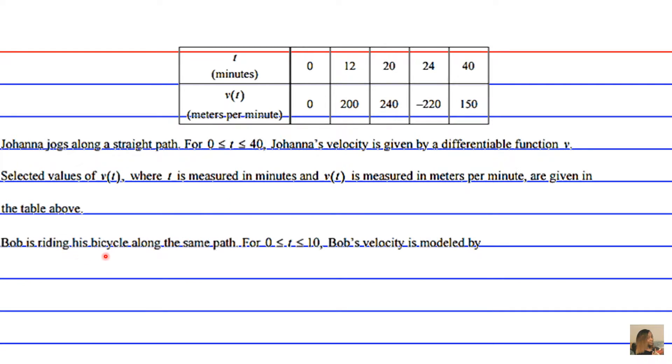Bob is riding his bicycle along the same path for a time duration of t between zero and ten minutes. Bob's velocity is modeled by b of t equals t cubed minus 6t squared plus 300.